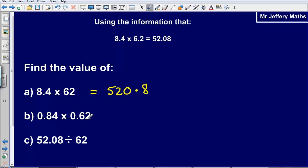Next one, 0.84 times 0.62. Here, both of these answers have been divided by 10. So that means that we could divide this by 10, then by 10 again. Well, that's the same as dividing by 100. So that would be 0.5208.